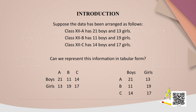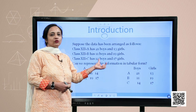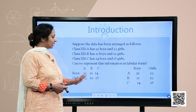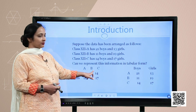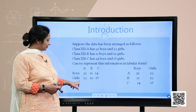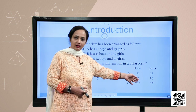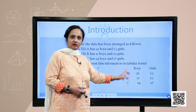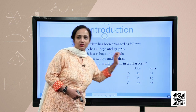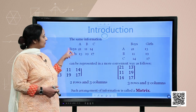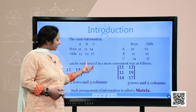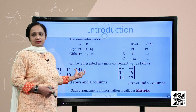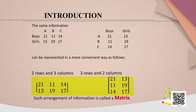Suppose the data has been arranged as follows: class 12A has 21 boys and 13 girls, class 12B has 11 boys and 19 girls, class 12C has 14 boys and 17 girls. The same data can also be represented in tabular form with columns for boys and girls and rows for sections A, B, C. The same tabular data can then be written in the form of matrices — that square bracket form is called a matrix.